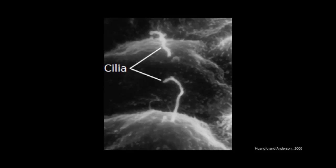For this reason, they were considered by scientists as vestigial organelles with little functional importance. However, this changed 15 years ago, when defects in the primary cilia were found to be the origin of many human genetic diseases, collectively known as ciliopathies.